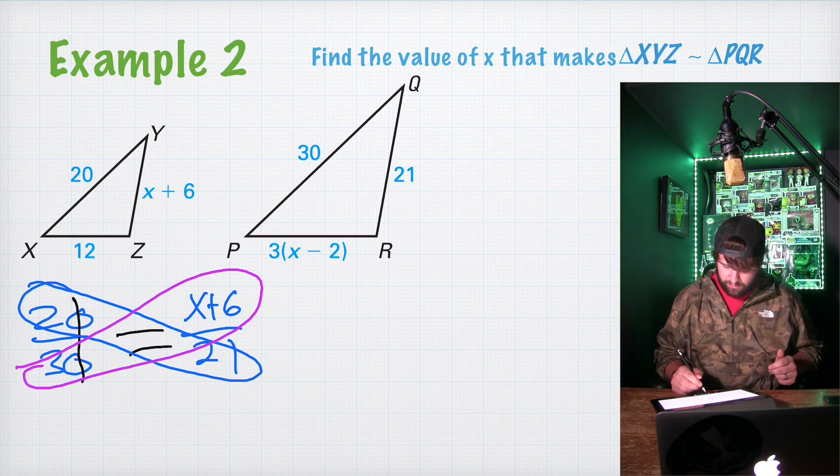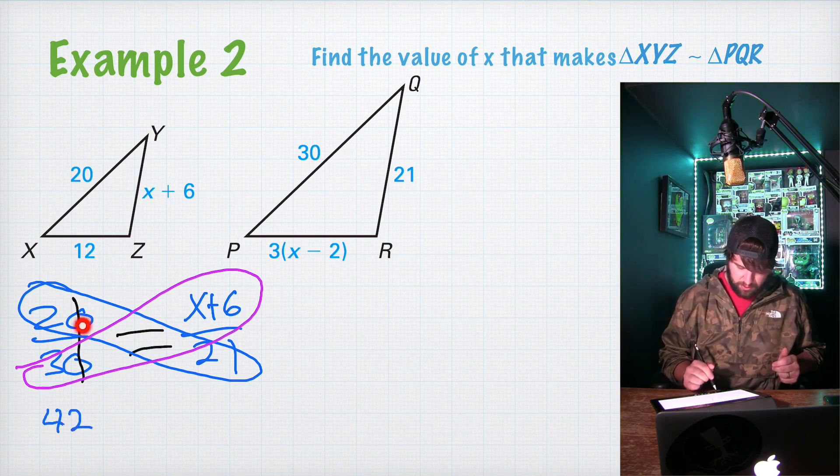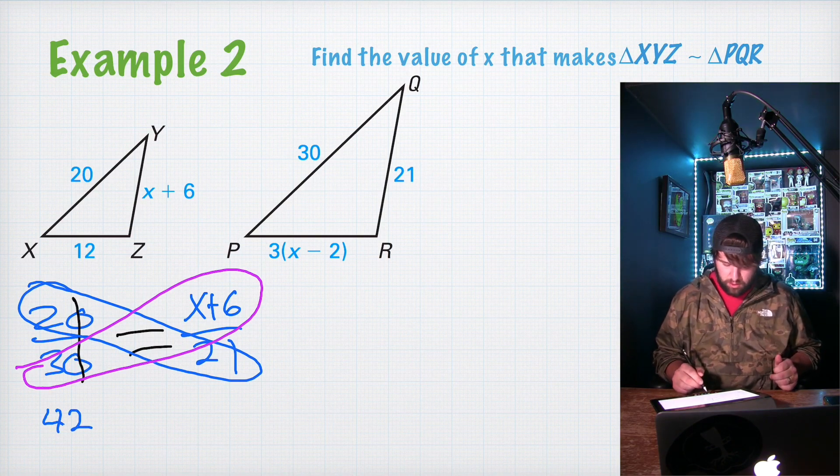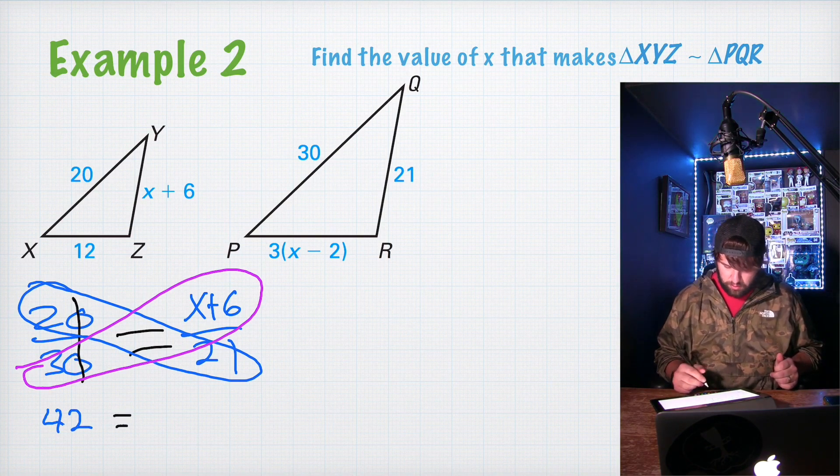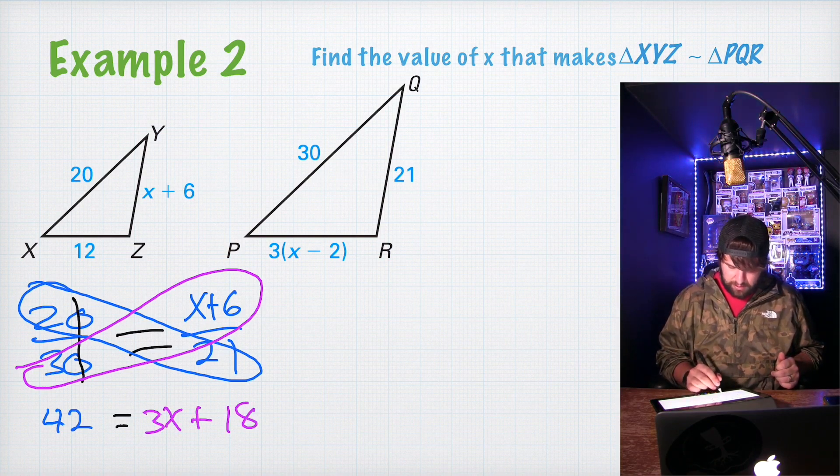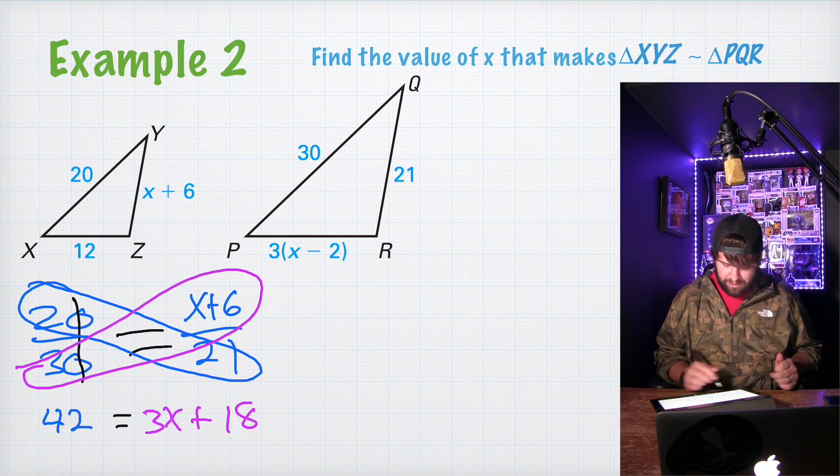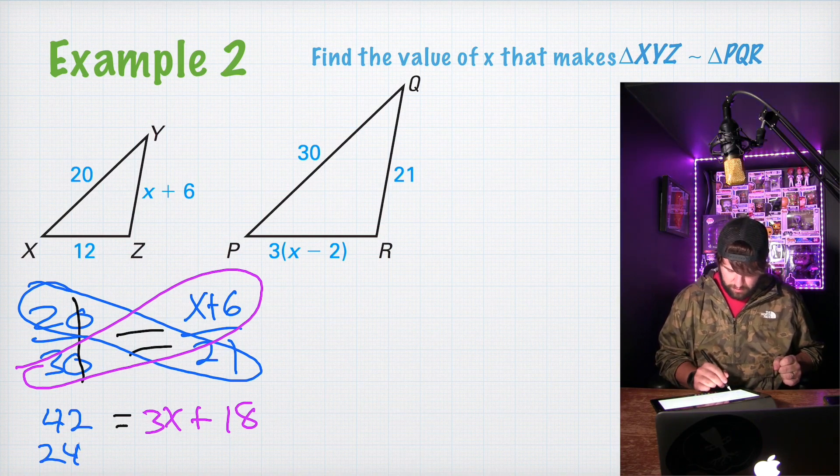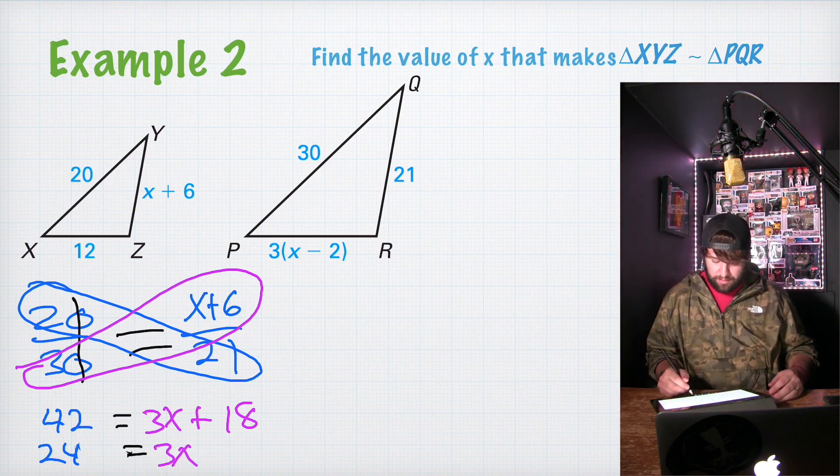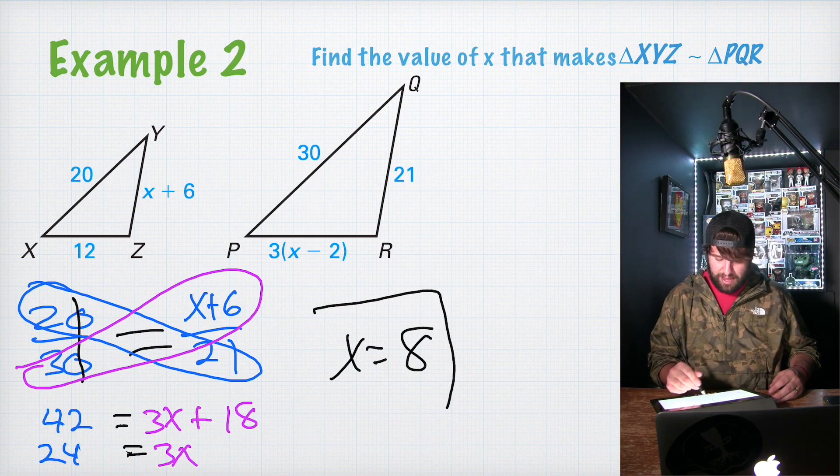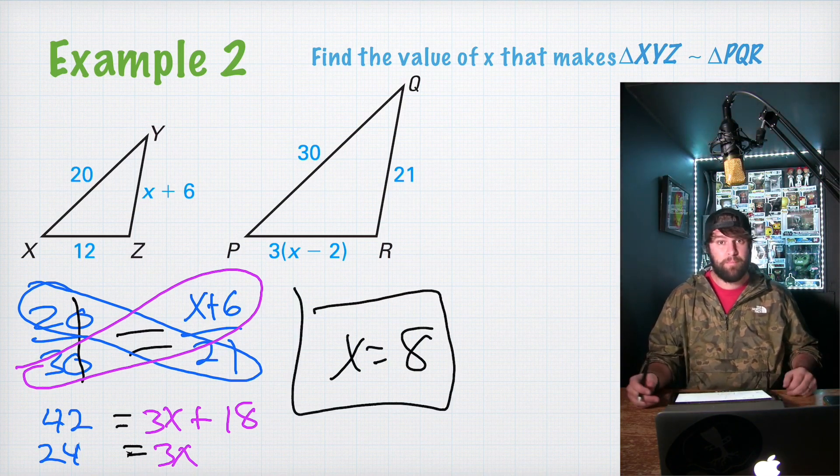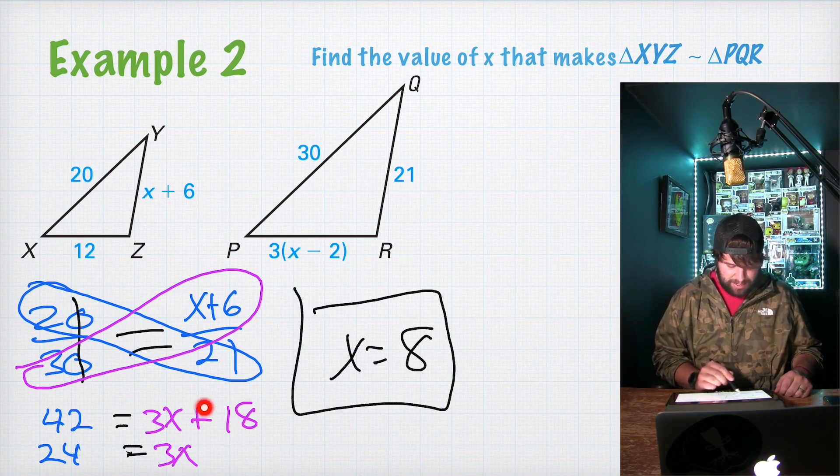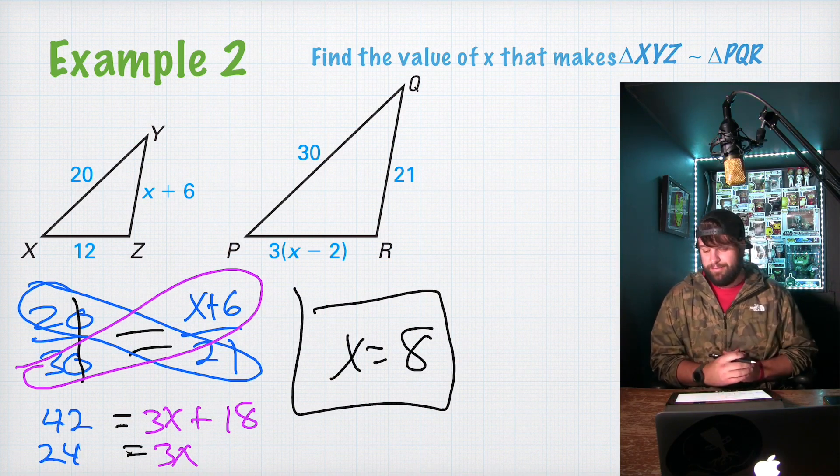So 2 times 21 is going to give us 42, because remember we canceled our zeros out, so it's just 2 over 3. 42. And we're going to set that equal to 3X plus 18. Subtract 18 from each side. And we're going to be left with 24 equals 3X. And then if we divide each of those sides by 3, X equals 8. Pretty basic. Remember, we subtracted 18 here. That's what happened here. And then we divide it by 3 to get X by itself. Let's keep going.